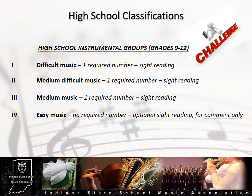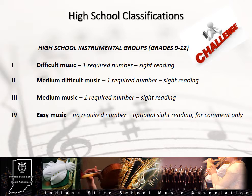Group 4 ensembles would perform medium-easy music and would consist of less experienced players. Group 3 is for developing high school players performing medium-level music. Group 2 would consist of ensembles with more proficient experienced players performing medium-difficult music. As with the JME division, Group 1 is for the most experienced ensembles consisting of advanced players performing difficult music. In judging high school ensembles, your expectations and standards of performance should be higher than at the JME level. However, it is still important to recognize that there may be a great difference in performance level from Group 4 to Group 1.